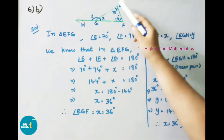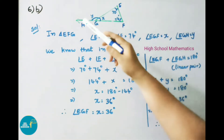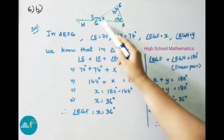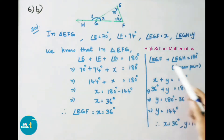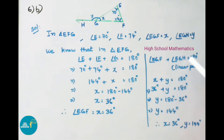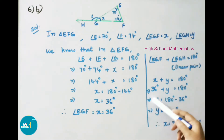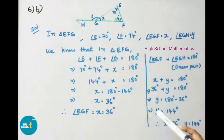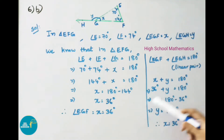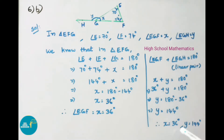Next, angle EGF plus angle EGH equals 180 degrees, because x and y form a linear pair. So angle EGF (x) plus angle EGH (y) equals 180 degrees. We know x equals 36 degrees, so 36 degrees plus y equals 180 degrees. Transposing, y equals 180 minus 36, so y equals 144 degrees. Therefore x equals 36 degrees and y equals 144 degrees.